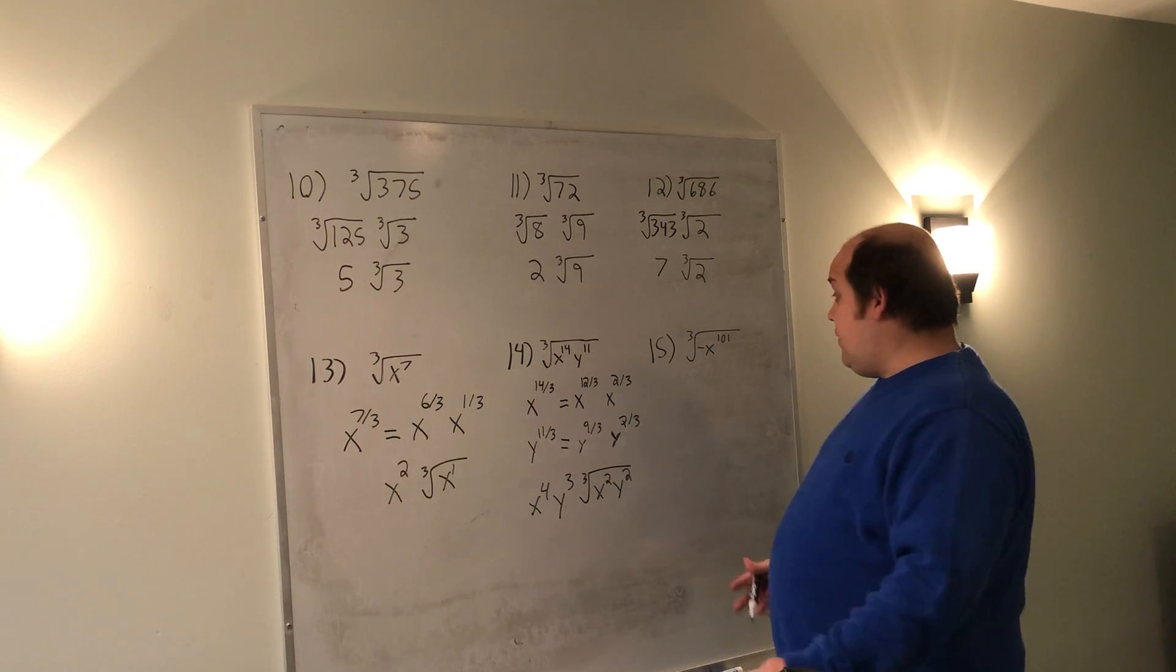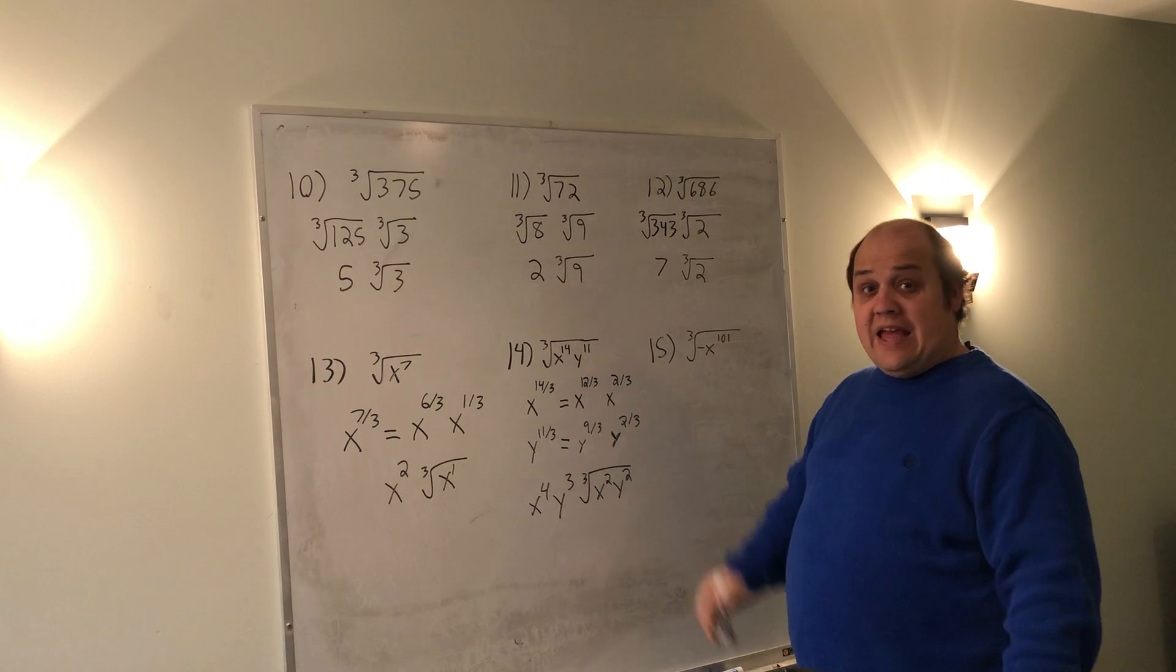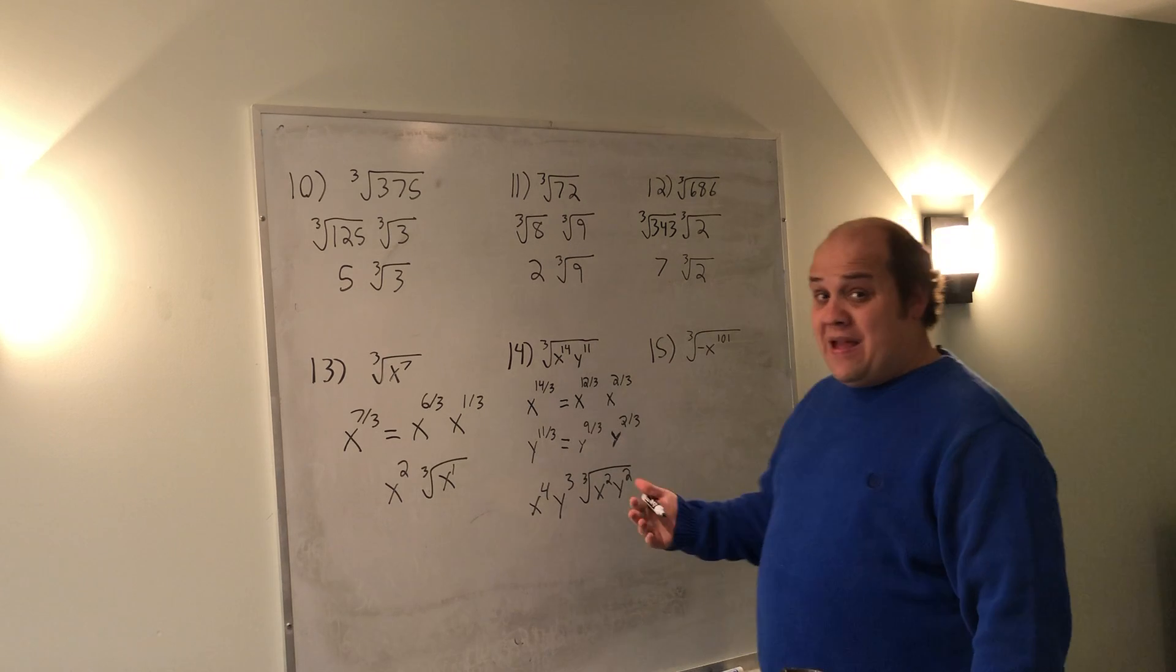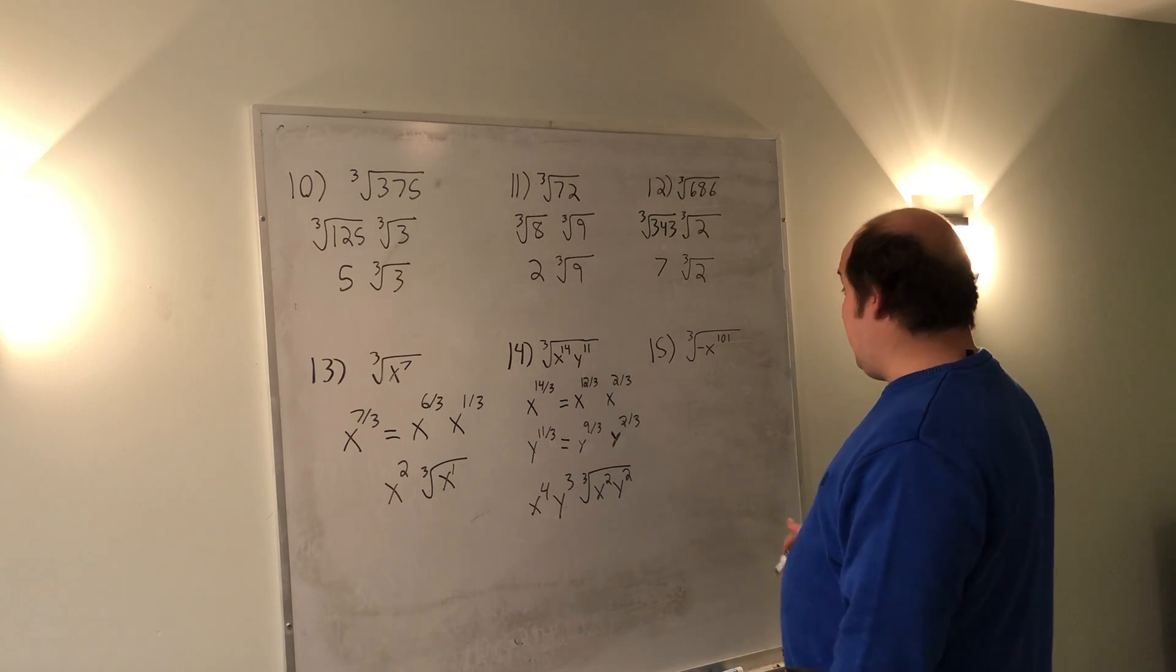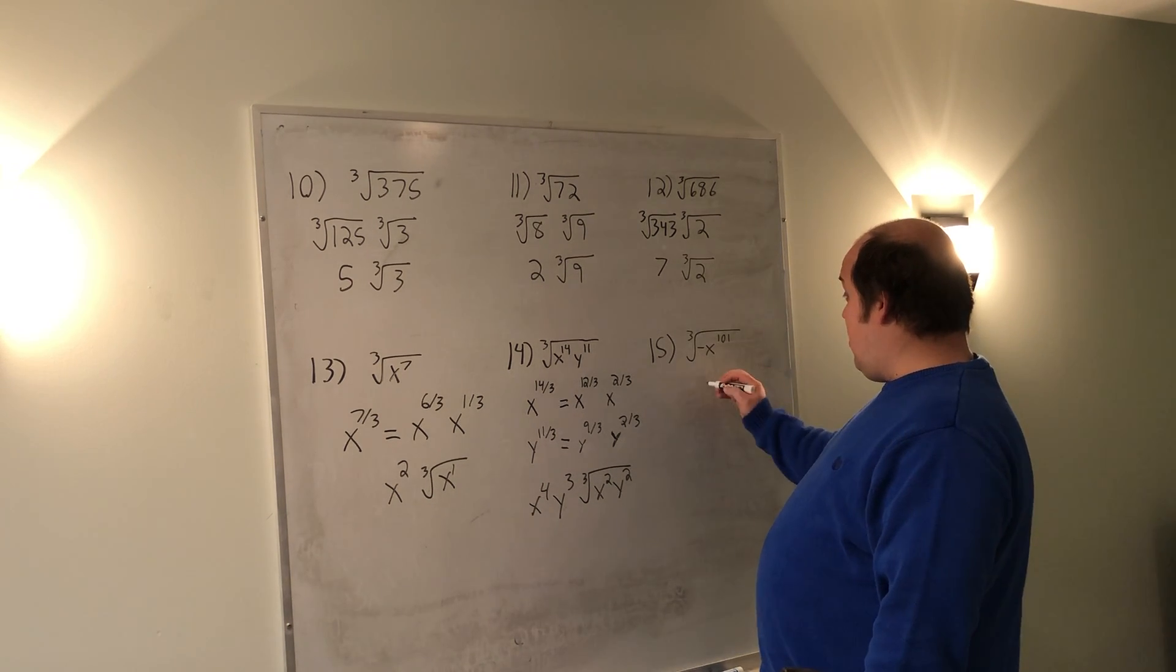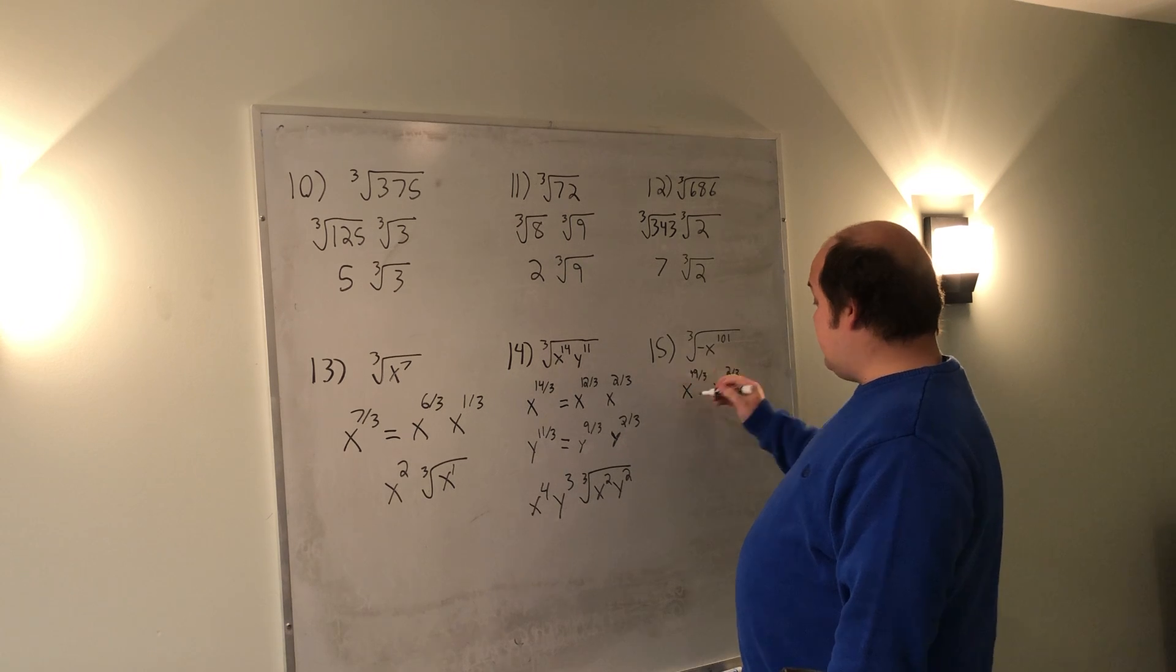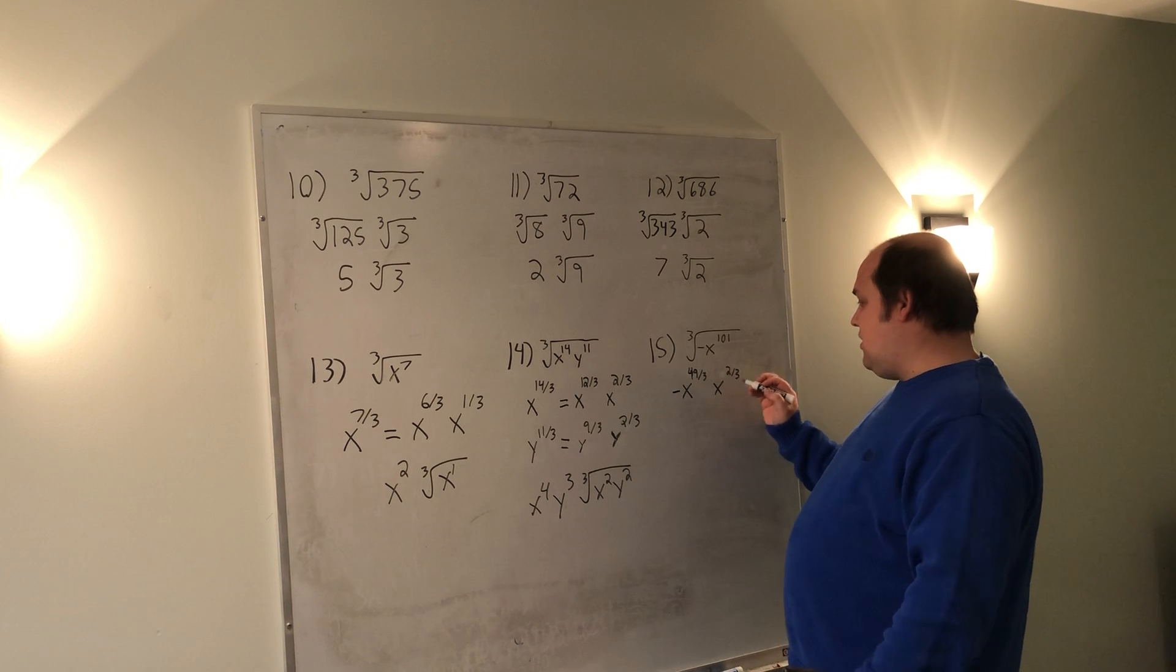Number 15 again has a negative under here. It's reminding you that because this root is odd numbered, I'm allowed to have that negative. Really in this case, you can have the negative come out or the negative stay behind, and mathematically they're exactly the same. I'm going to bring the negative out, but again it would be absolutely fine if you left it behind. So I'm going to call this negative x to the 99/3 times x to the 2/3.